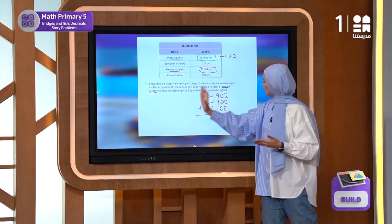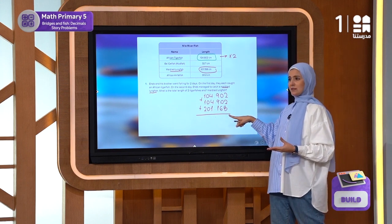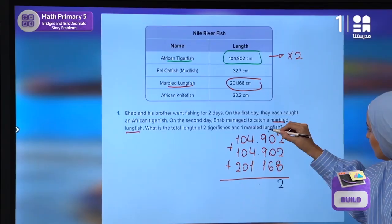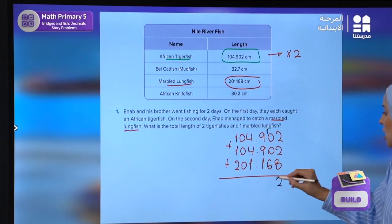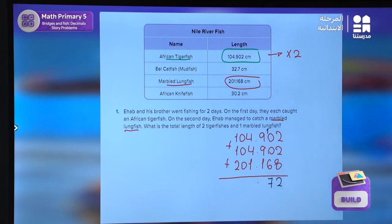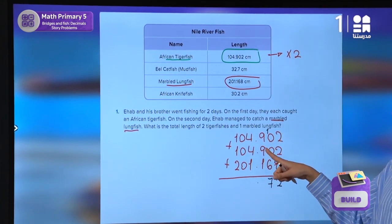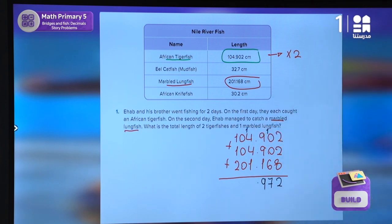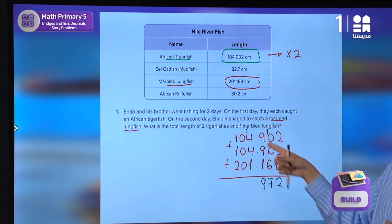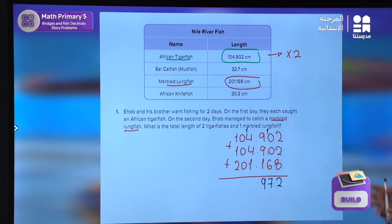Now what do I see? 2 plus 2 plus 8 — the answer is 12. Then I get 1 plus 0 plus 0 plus 6, so the answer is 7. Next, 9 plus 9 is 18, plus 1 — the answer is 19. Now we regroup: we get 5 plus 4 plus 1, so the answer is 10.